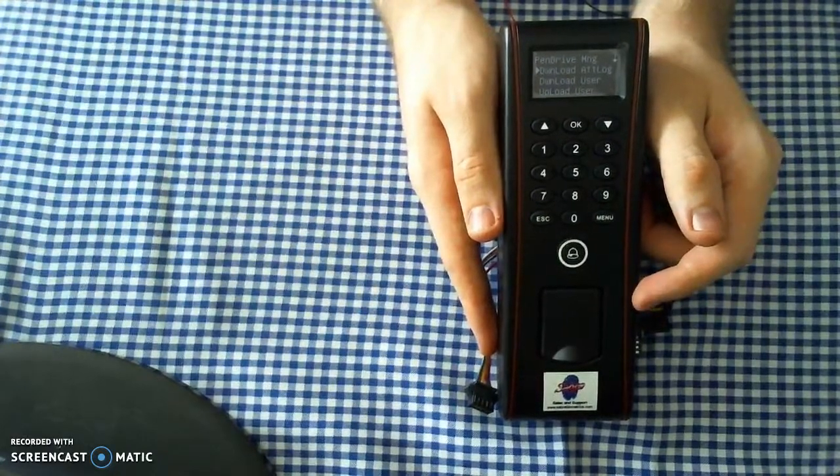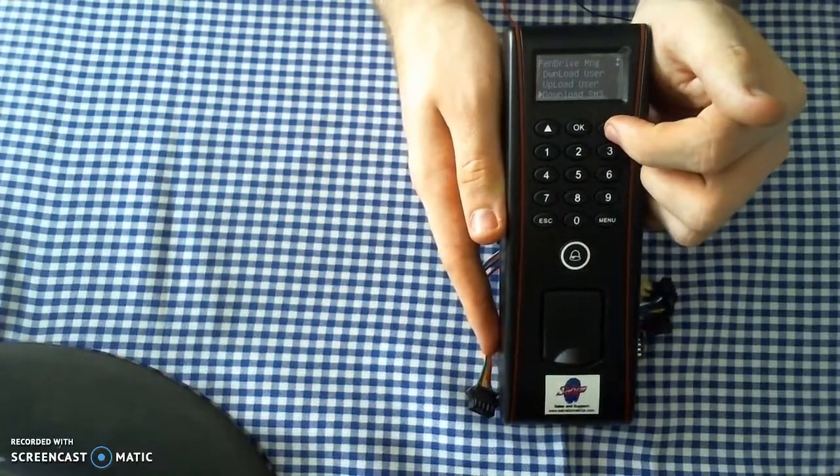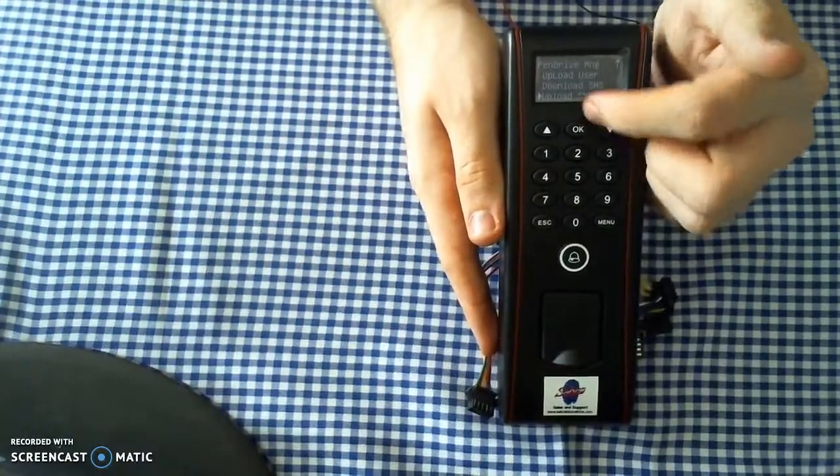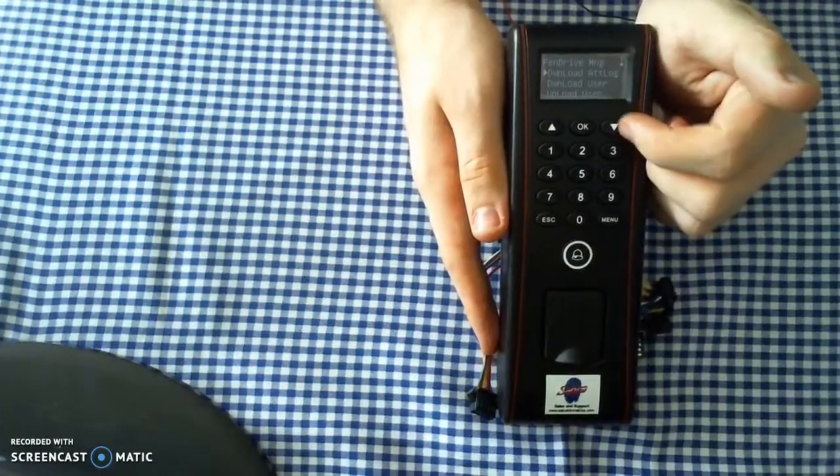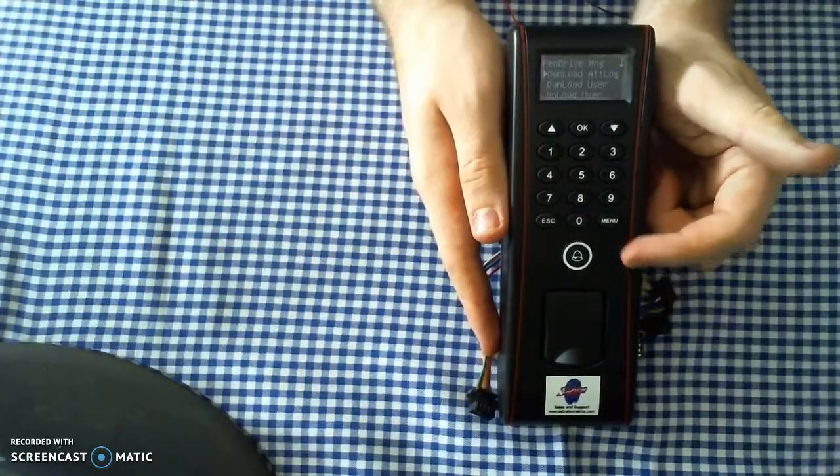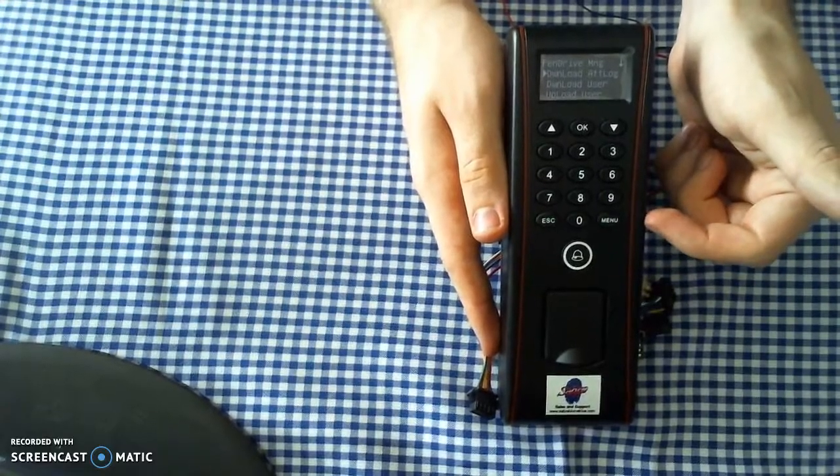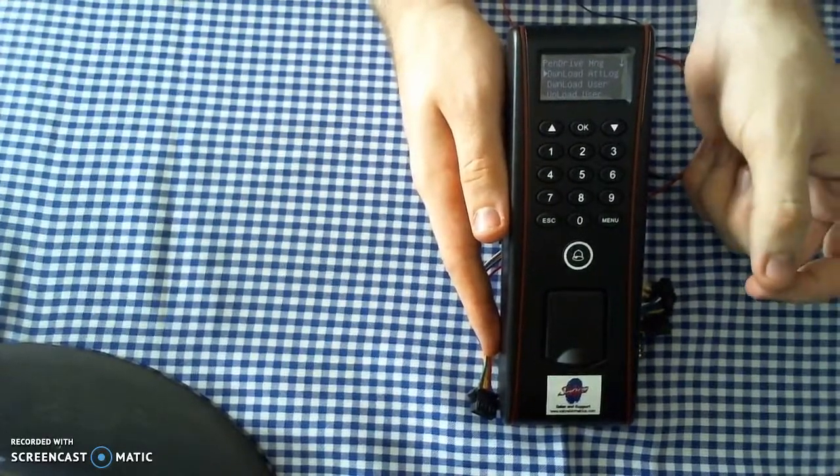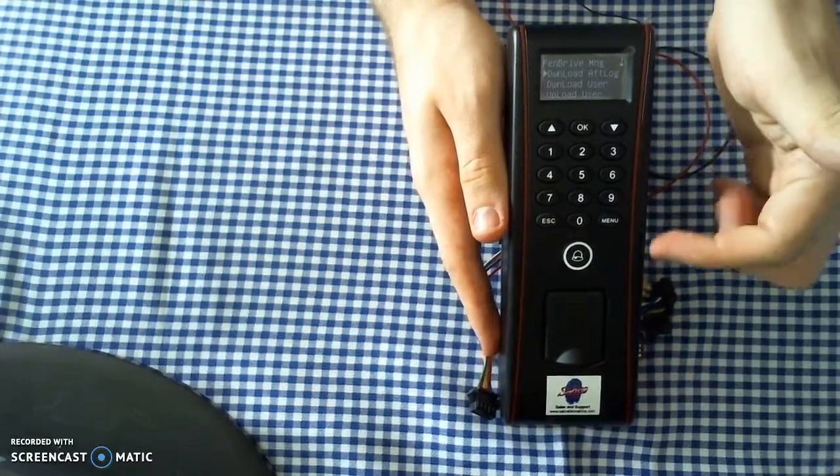You don't have to worry about the SMS part. It's just the download at logs, download users, and upload users. So if you were downloading at logs, essentially, what you would be doing is you'd be downloading the actual attendance data on this device to see when people clocked in, et cetera. And then you could put that onto your software and see it through there.